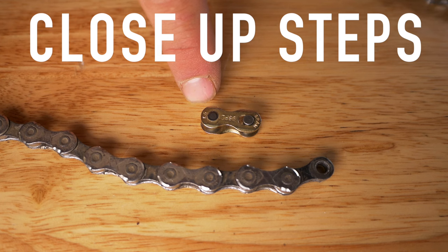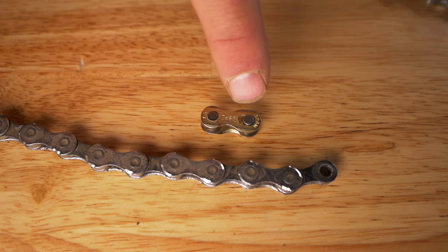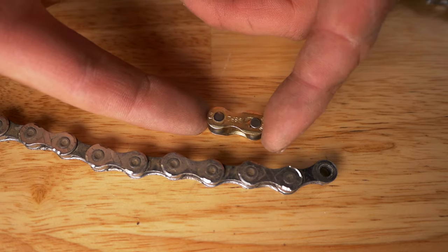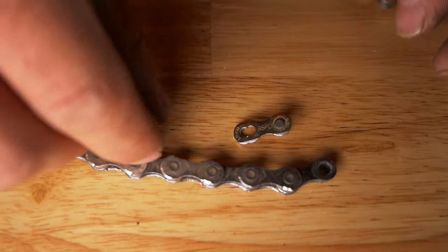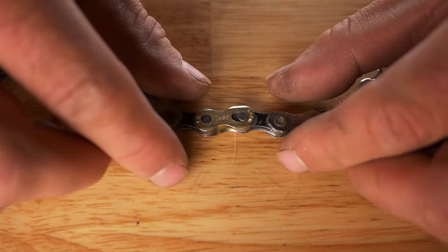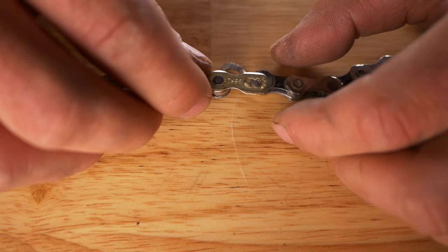This is a power link. What's different about this one from a traditional chain is that these have extra slots in them. So to remove these, they need to be pressed inward toward each other. It comes apart.